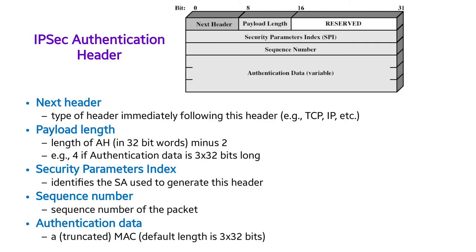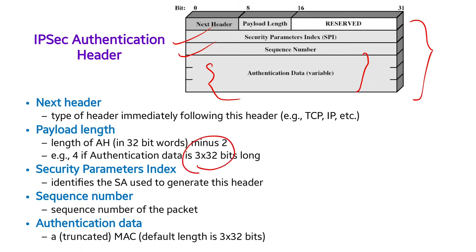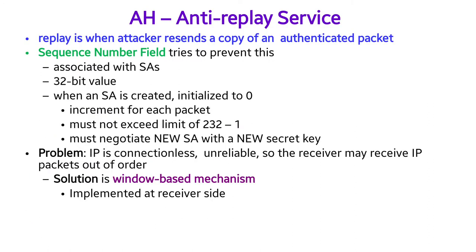The IP security authentication header format has the first 8-bit field as the header, followed by payload length, reserved, security parameter index, sequence number, and variable-size authentication data. The header is immediately followed by other headers like TCP, IP, etc. Payload length equals the authentication header length minus two. The SPI identifies the security association. The sequence number functions like a serial number, and the authentication data contains the original truncated MAC data.